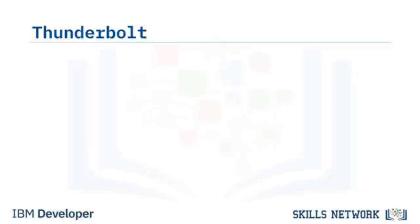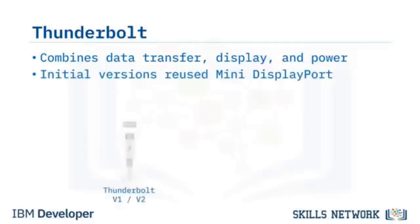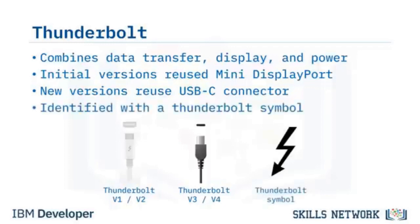Thunderbolt is a hardware interface developed by Intel and Apple, originally marketed as Lightpeak. It combines data transfer, display, and power into one cable and allows up to 6 peripheral devices via daisy chaining. Thunderbolt versions 1 and 2 use Mini DisplayPort connectors; versions 3 and 4 use the USB-C connector. Thunderbolt 3 doubled data transfer to 40 gigabits per second, while Thunderbolt 4 supports USB 4 protocol, dual 4K displays, and Thunderbolt Alternate Hubs. All Thunderbolt ports are identified using the Thunderbolt symbol.